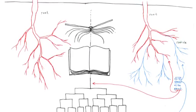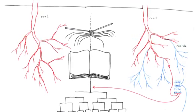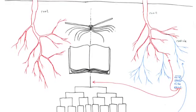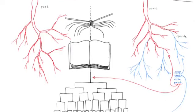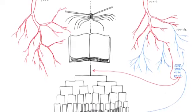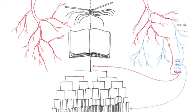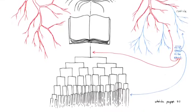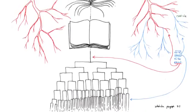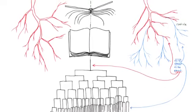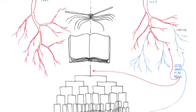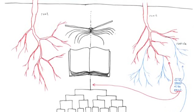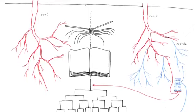The radicle system, or fascicular root, is the second figure of the book to which our modernity pays willing allegiance. This time, the principal root has been aborted, or its tip has been destroyed. An immediate, indefinite multiplicity of secondary roots grafts onto it and undergoes a flourishing development. The root's unity subsists, as past, or yet to come, as possible.